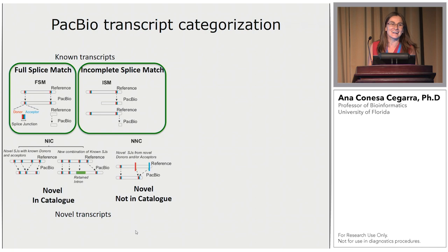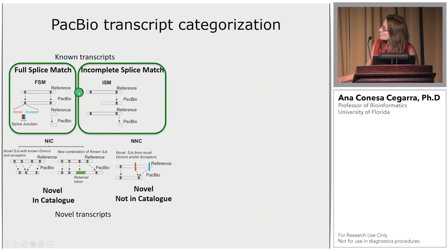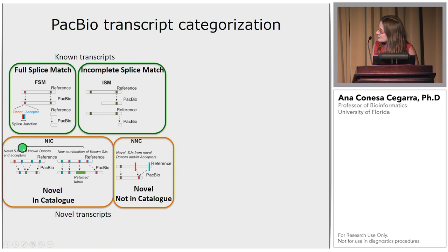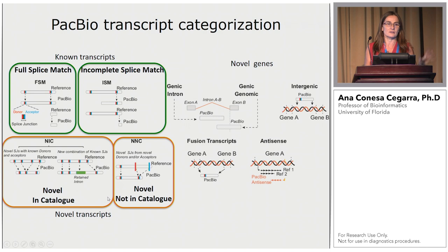The smart idea of SCANTY was to create a categorization of PacBio reads by their similarity with the reference. We have what we call a full splice match — when a PacBio read matches a reference transcript at all junctions — then a complete splice match which misses some of them. These are known transcripts. Then we have novel transcripts: novel in catalog and novel not in catalog. Novel in catalog are novel combinations of existing junctions, while novel not in catalog can have novel donor or acceptor sites. There are also a number of novel genes, fusion transcripts, and intergenic ones, but normally these are not many.